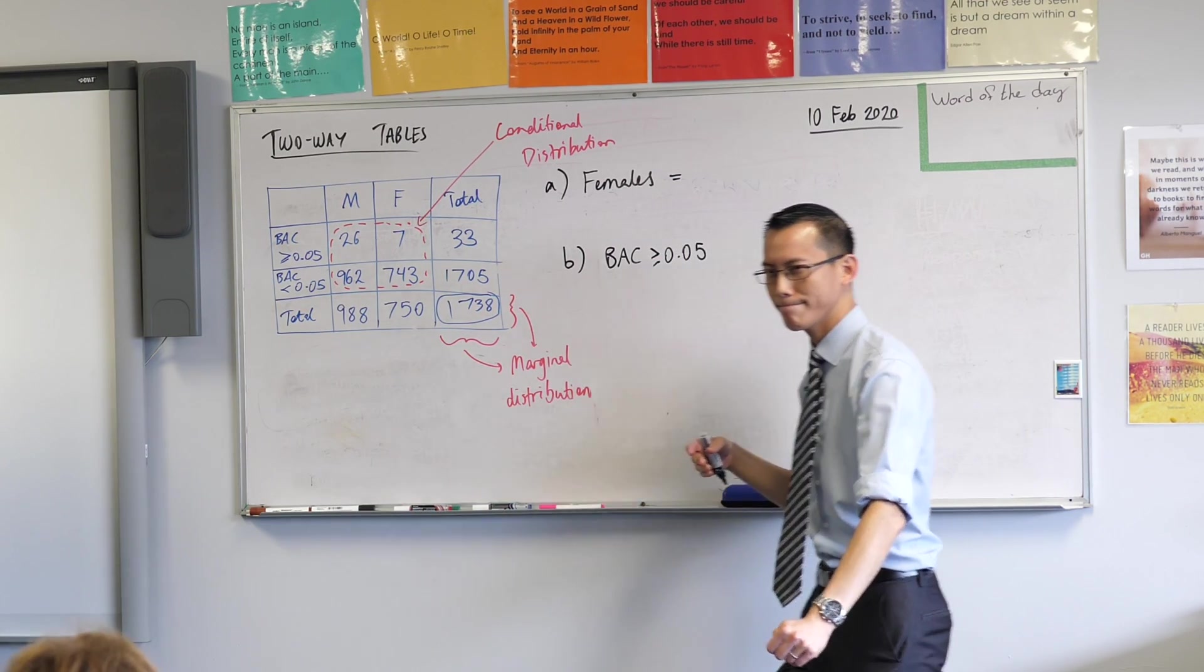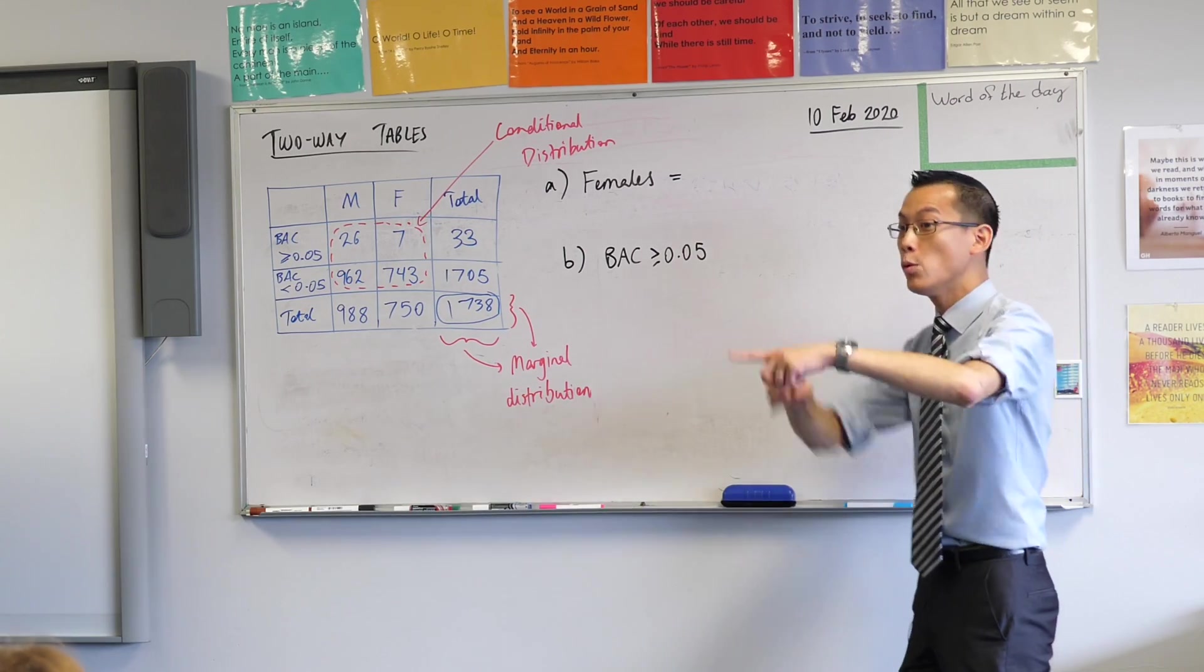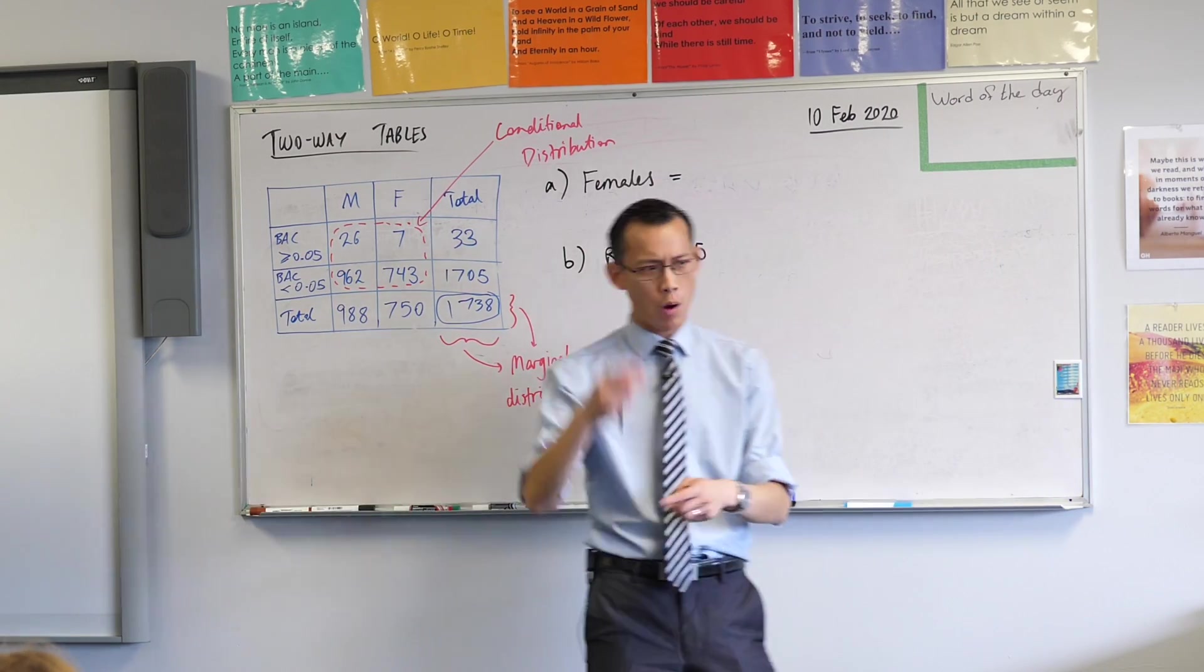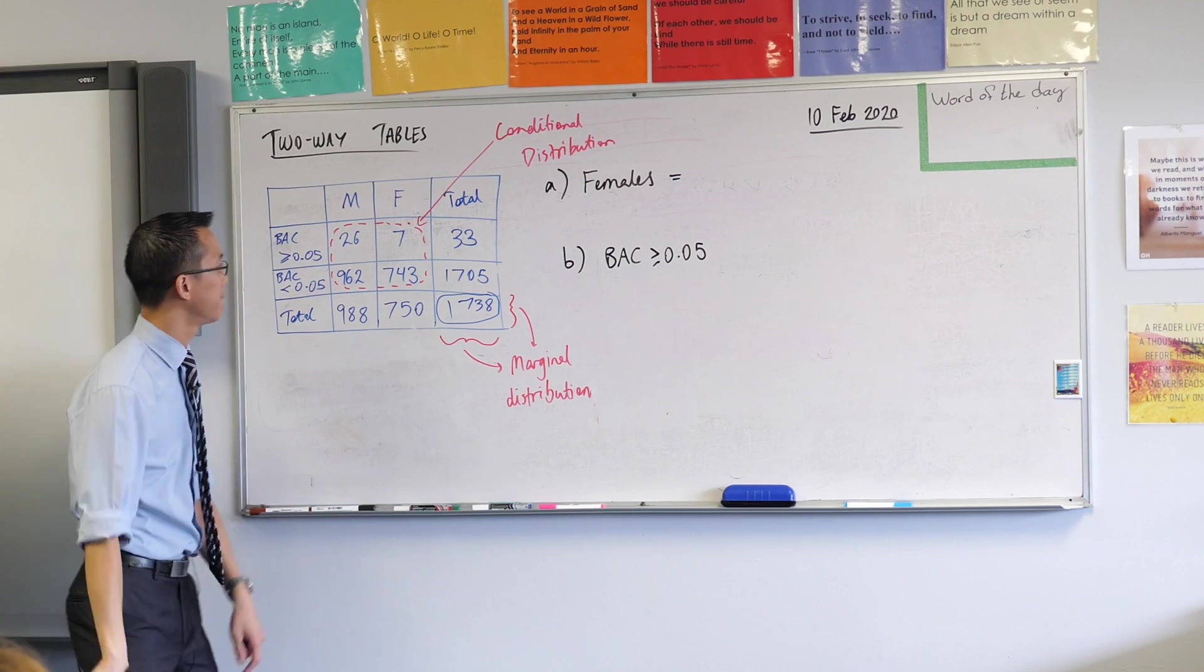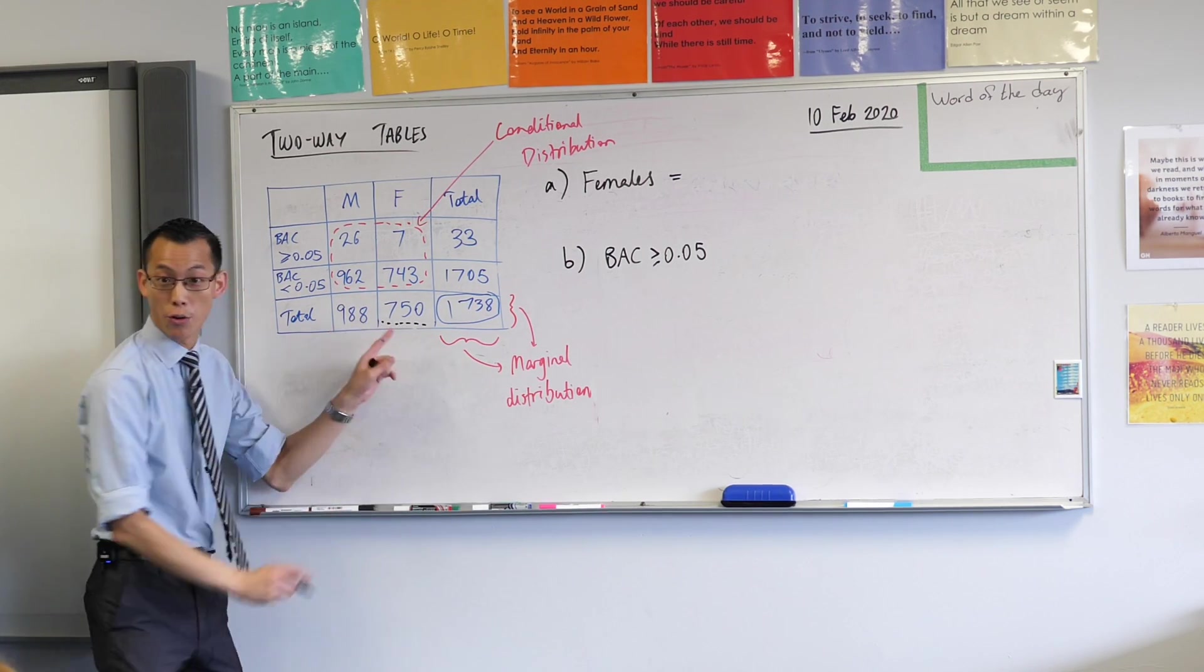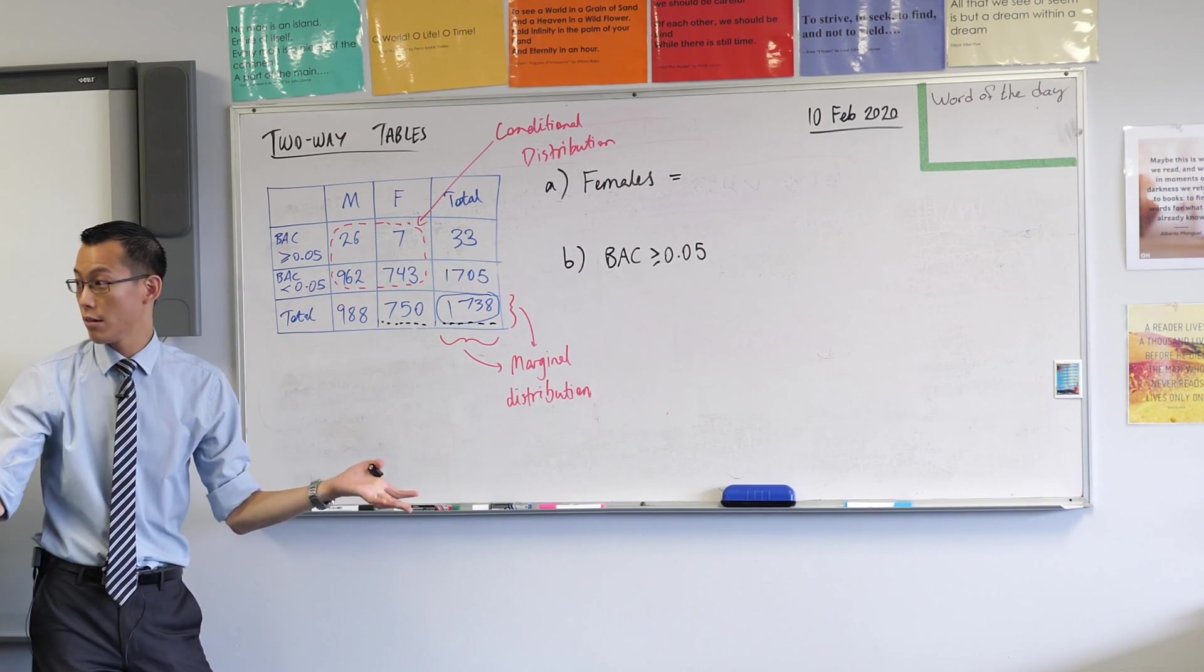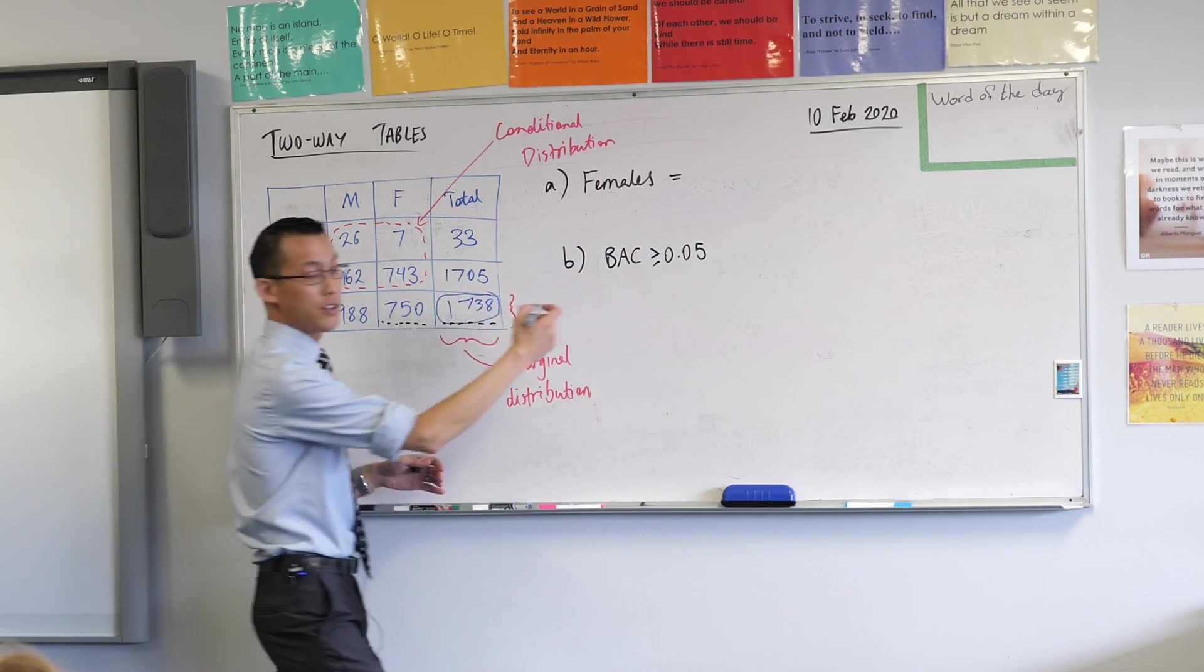Sophie, what do you see? The total of females over the total in general. So here's the total female number, and then this is the general population. Yeah, do we agree with that? Let's go ahead and do that. So that's 750 over 1738. That's a really gross denominator, so I expect we're going to get some weird decimals.